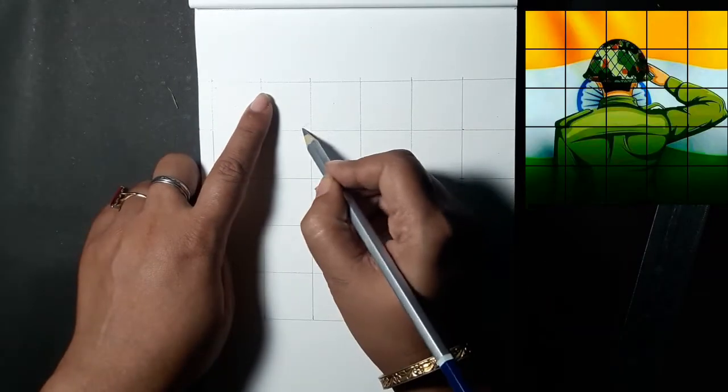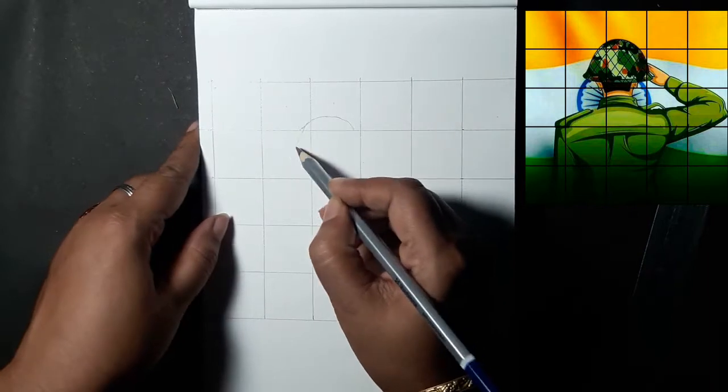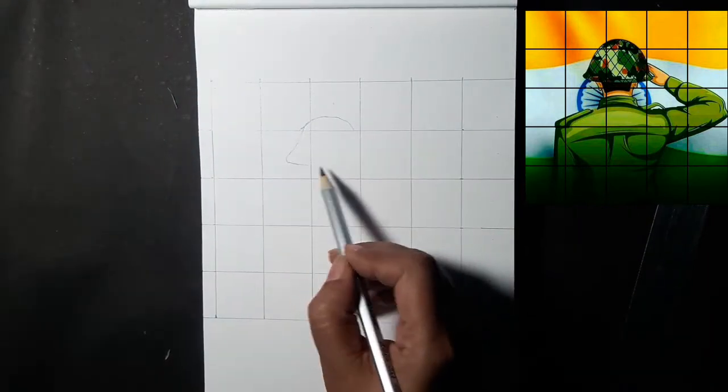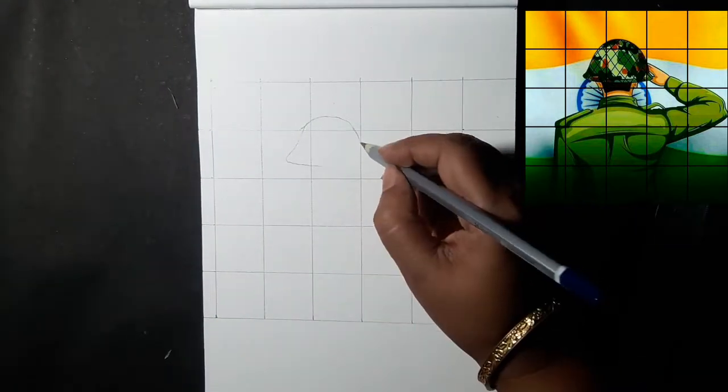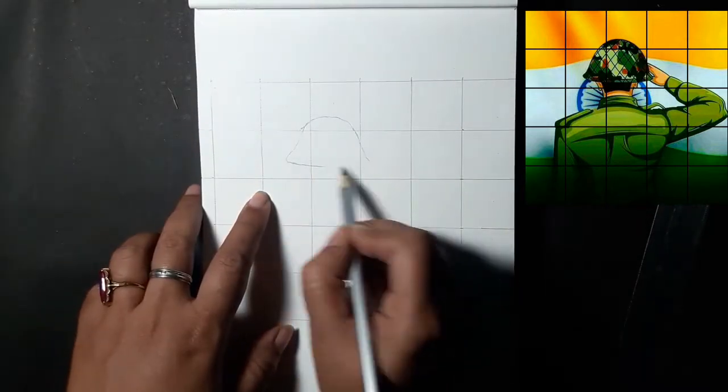Now observe the small square boxes one by one and keep drawing as similar as possible by observing from the reference.